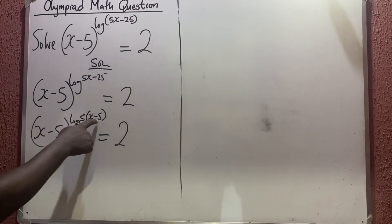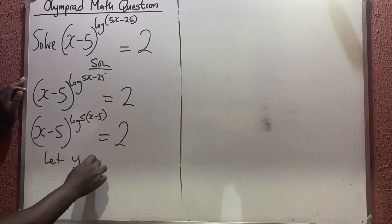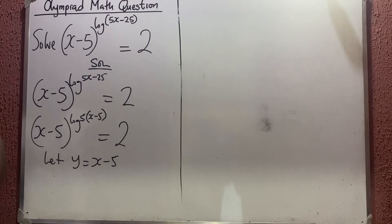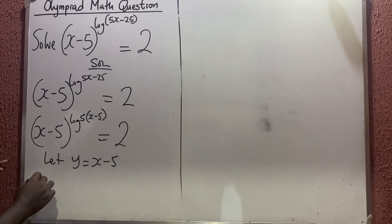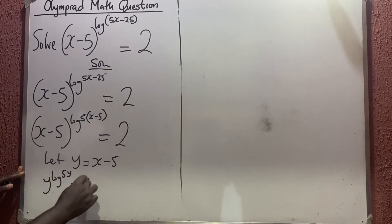Now since this and this are not the same, let y be equal to x-5. So anywhere I see x-5, I can put y. I will now say that this is y to the power log 5y equals 2.